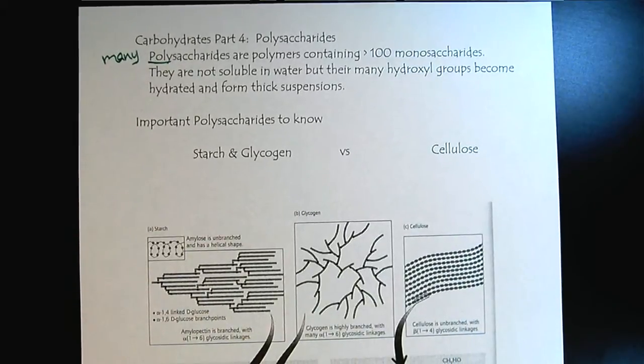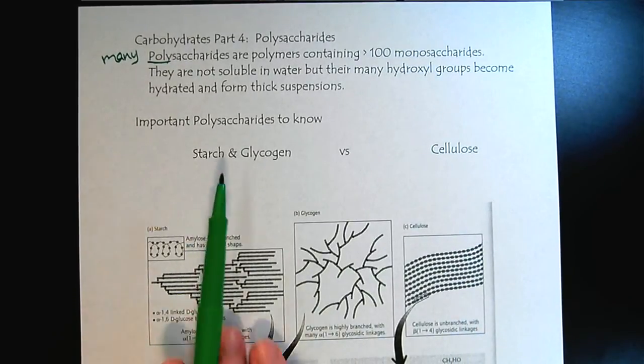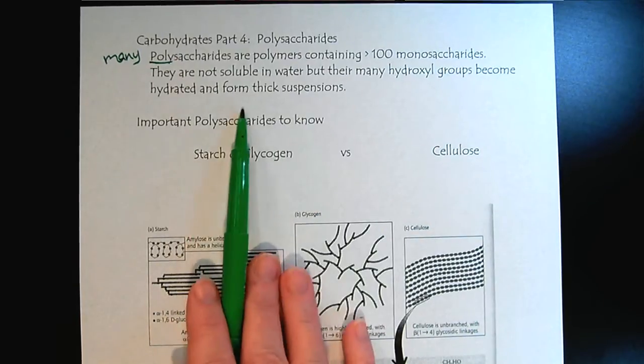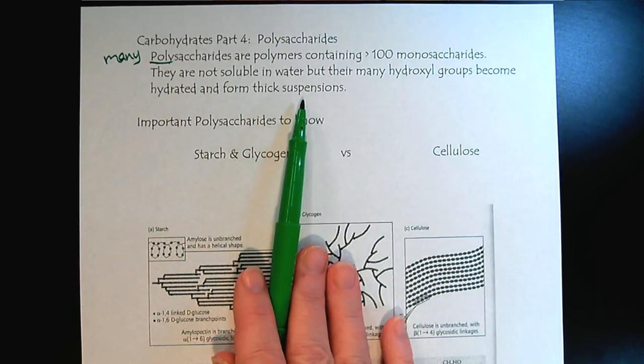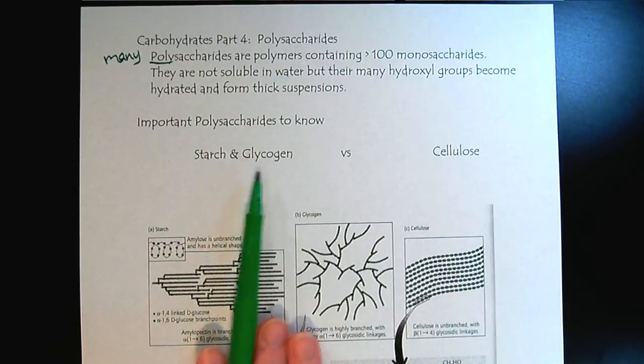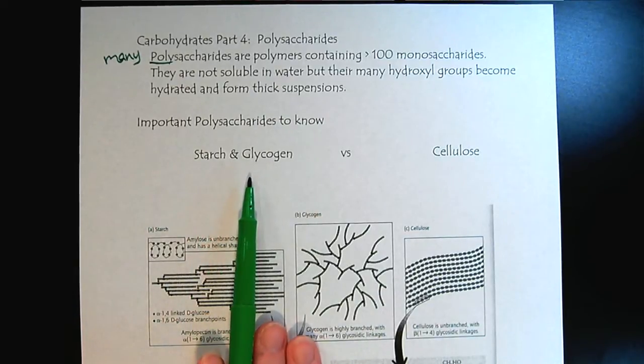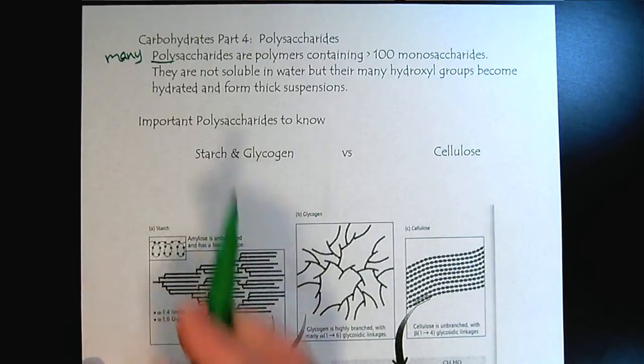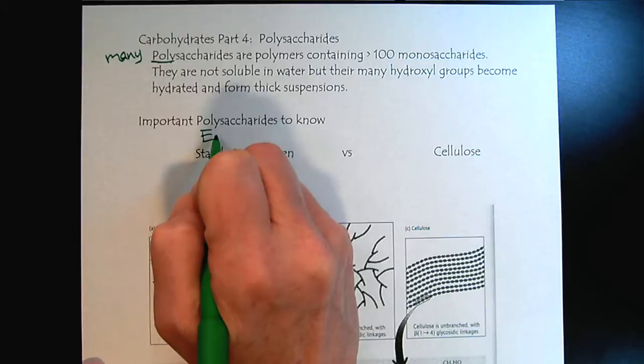So where do we see polysaccharides? Well, starch, right? So if you've ever kind of took corn starch in water, you could see that thick suspension. And glycogen. So these are two examples of important polysaccharides. And the role for these two they share is energy storage.